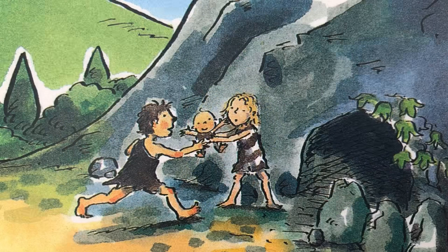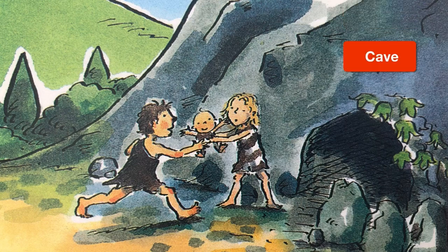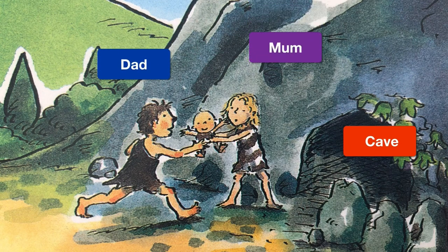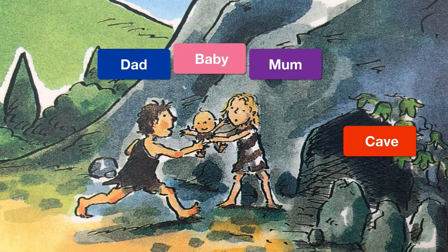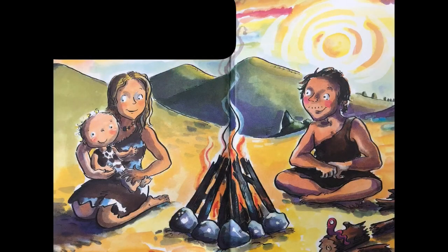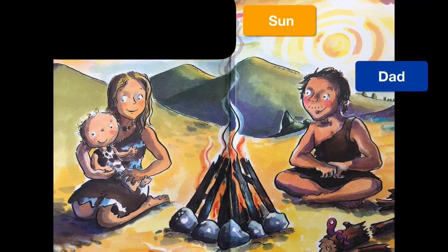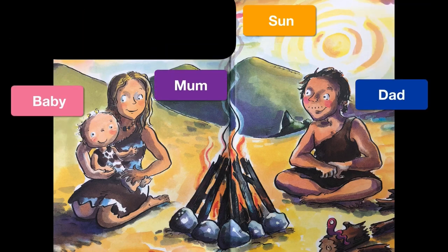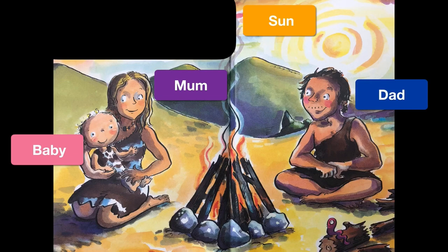Caveman, caveman lives in a cave. Dad, mum and baby. Evening and the sun goes down. Dad, mum and baby. And worm.